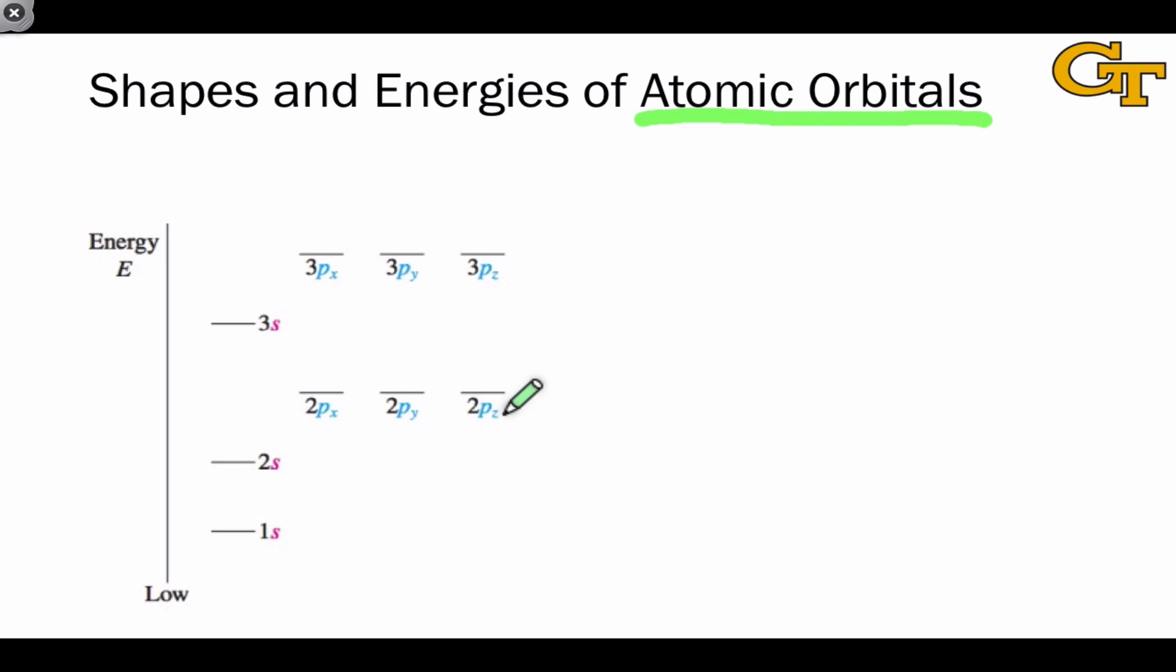And since we're not going to be dealing with transition metals, we don't need to worry about the d orbitals, and in fact most of the molecules we'll see will live in this territory at the n equals 2 level and below since we'll be dealing with first and second row elements.